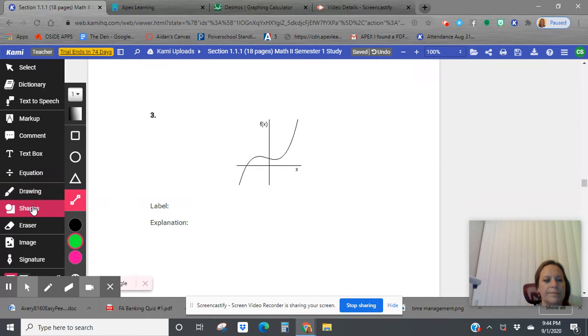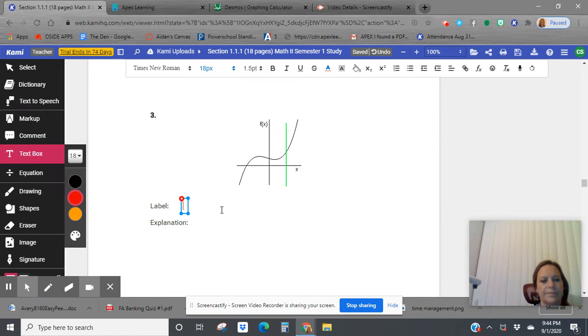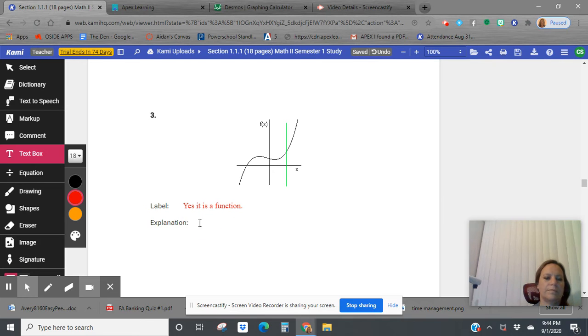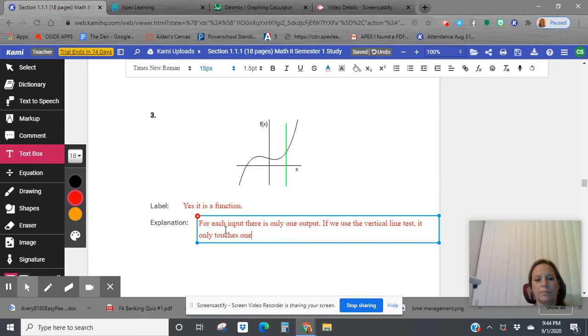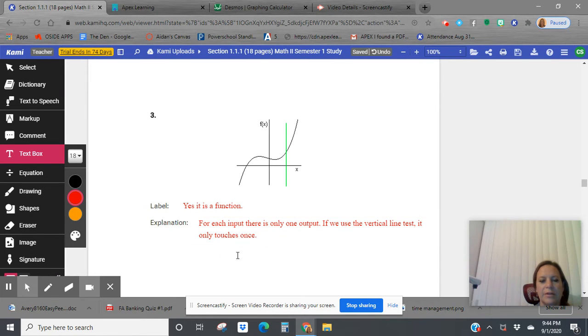Vertical line test on this one. Touches once. Each input, there is only one output. If we use the vertical line test, it only touches once.